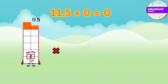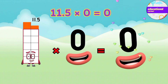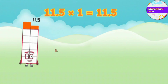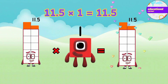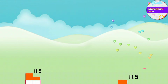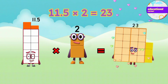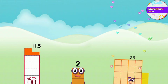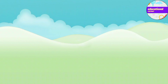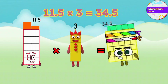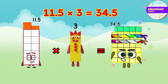11.5 x 0 equals 0. 11.5 x 1 equals 11.5. 11.5 x 2 equals 23. 11.5 x 3 equals 34.5.